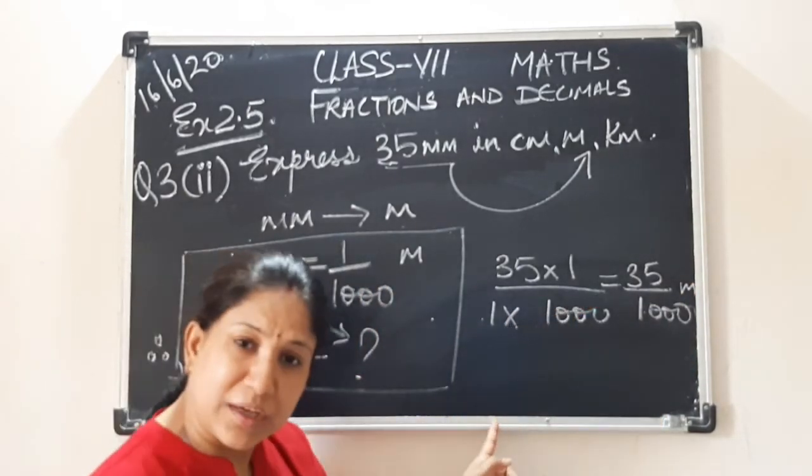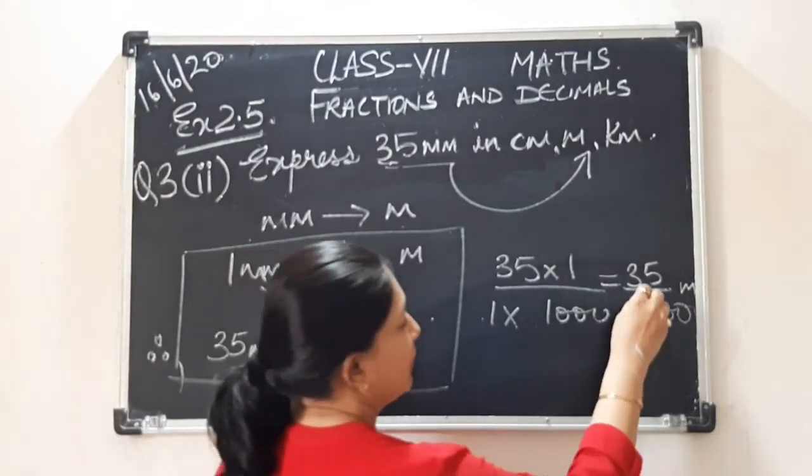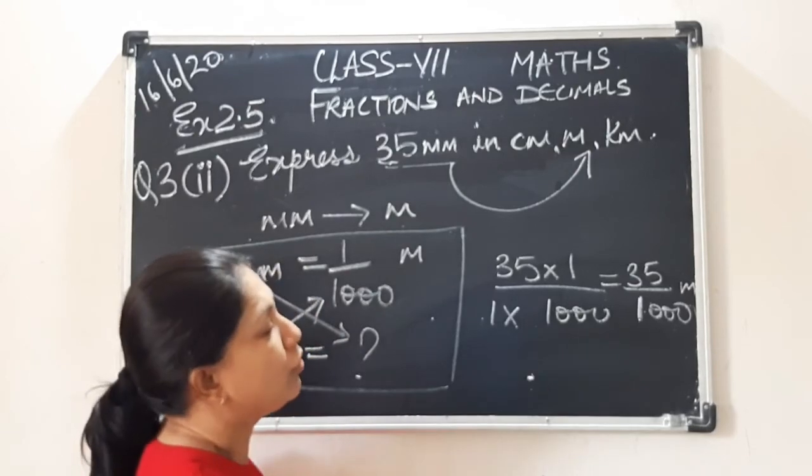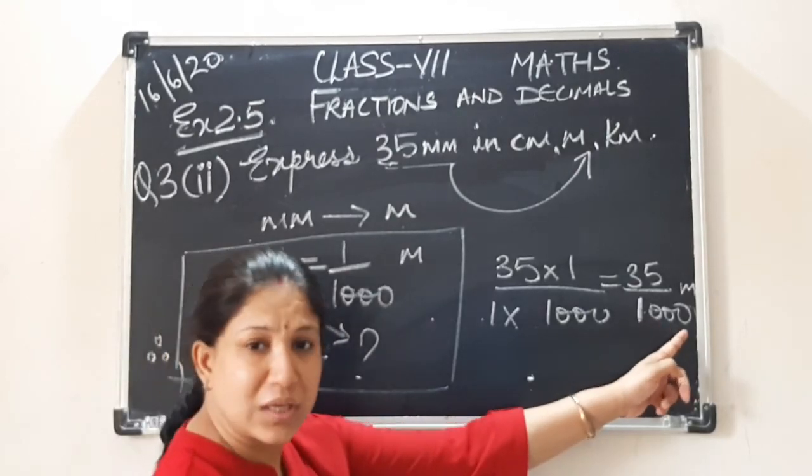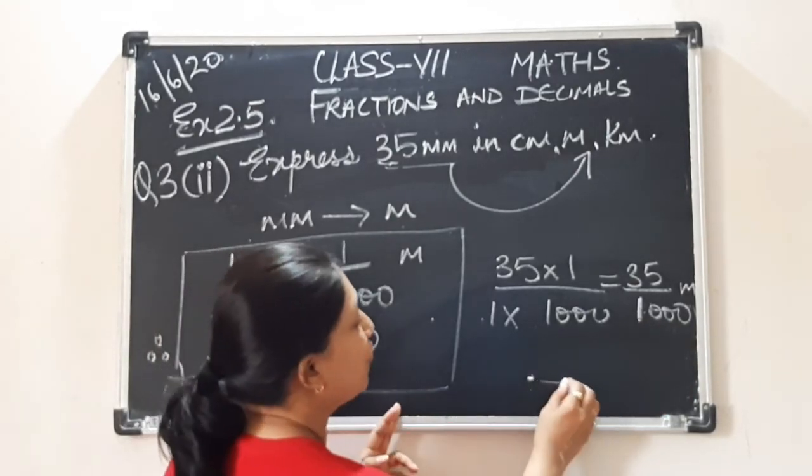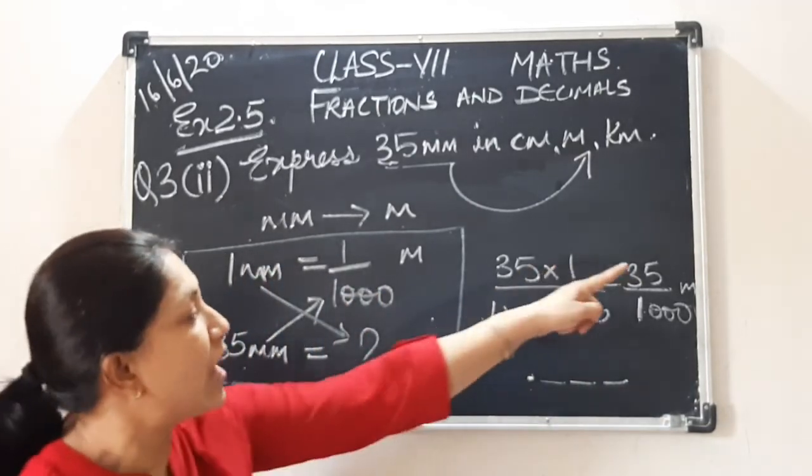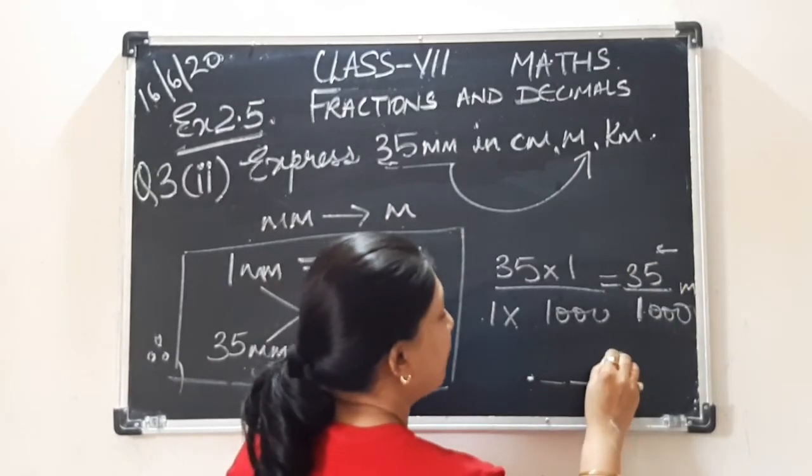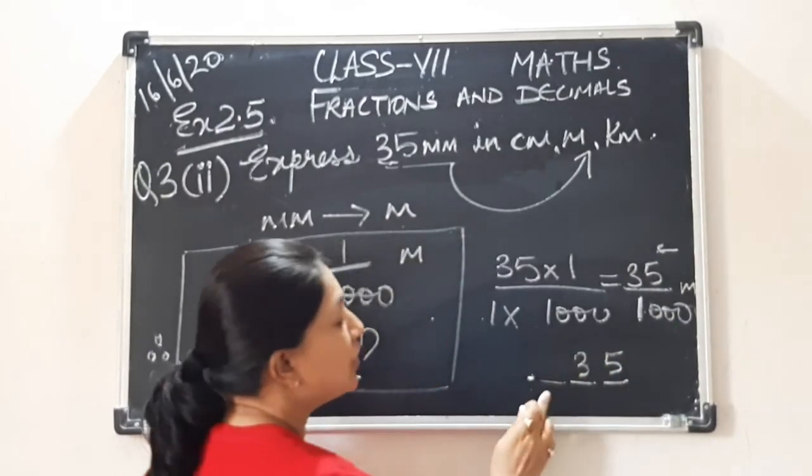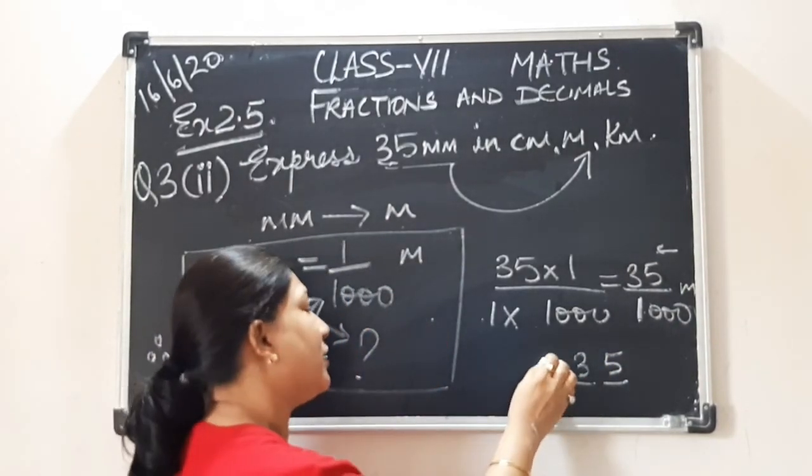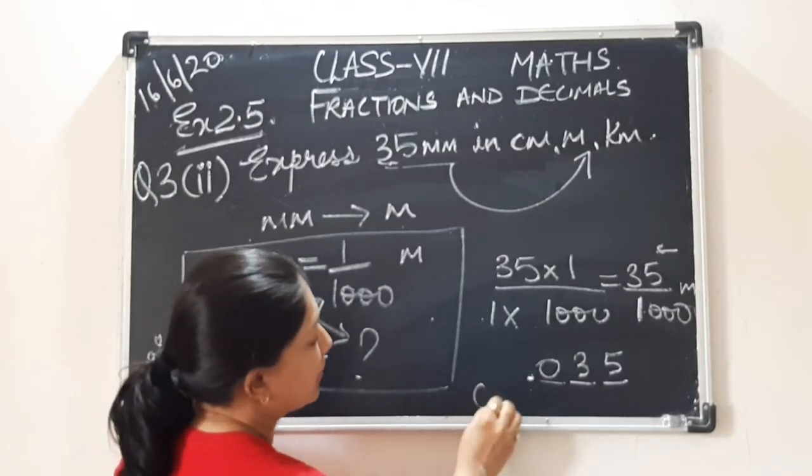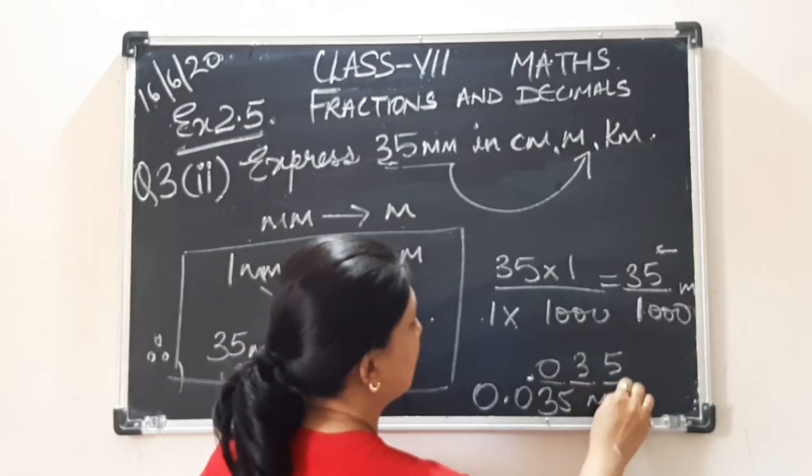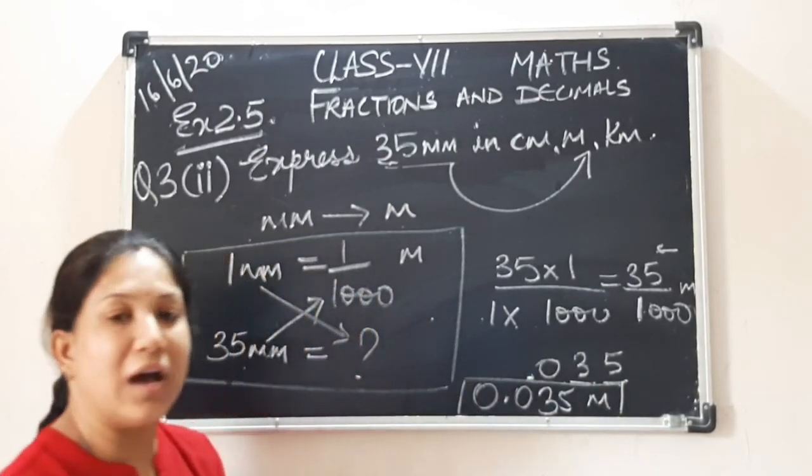And to convert it into centimeters? Yes. We will place one dot. This one will get changed to dot. How many zeros are there? Three zeros. So write down three dashes. We will start from the right. Start. What is this? 5. This is 3. Still one more dash is there. So insert one 0. So answer will be 0.035 meters. This is our answer.